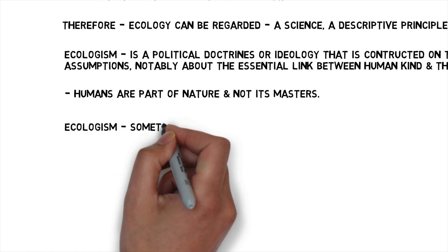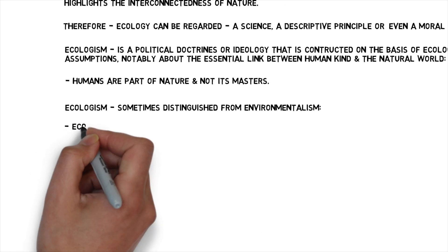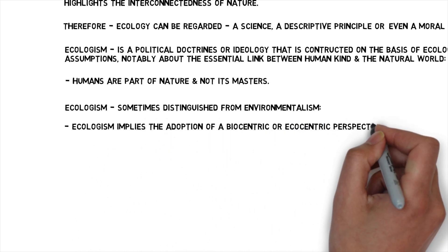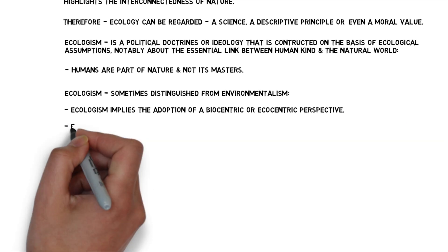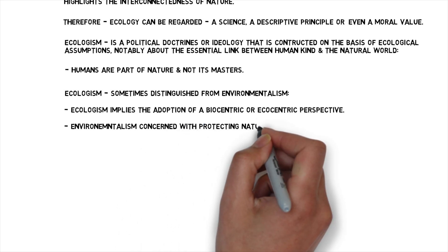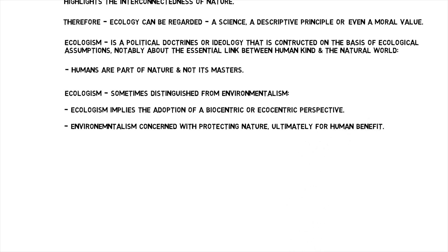Therefore, ecologism is sometimes distinguished from environmentalism. Ecologism implies the adoption of a biocentric or ecocentric perspective, while environmentalism is concerned with protecting nature ultimately for human benefit. What we need to understand is that ecologism is sometimes distinguished from environmentalism in that the former implies the adoption of a biocentric or ecocentric perspective.